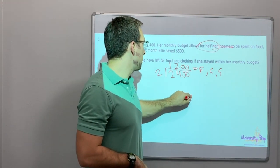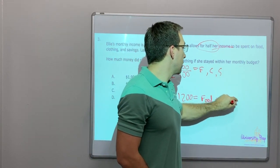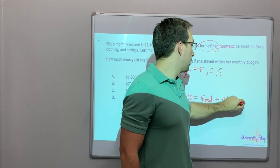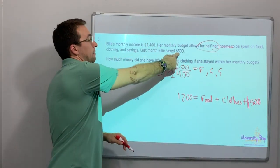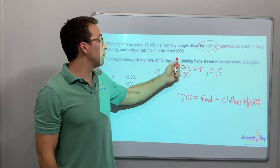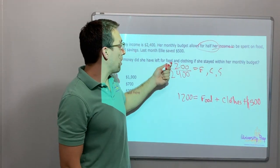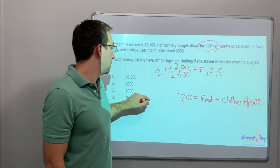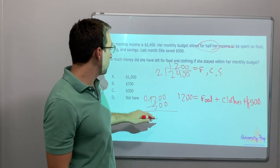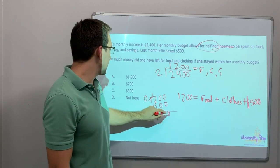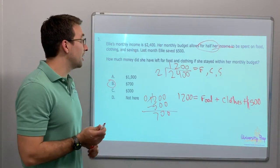Last month Ellie saved $500. So: $1,200 equals food plus clothing plus $500. How much does she have left for food and clothing if she stays within her monthly budget? $1,200 minus $500 is $700. So $700 is for food and clothing — that's a lot for food and clothes!